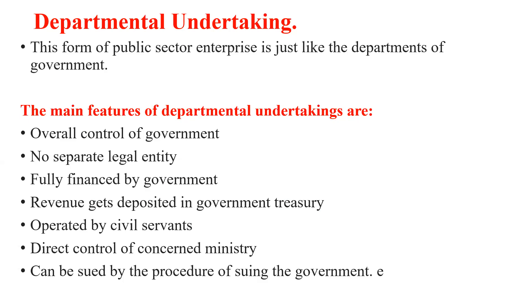The features of departmental undertaking are: first, overall control of government — the department is an inseparable part of government, so all activities are controlled by government. Second, no separate legal entity — it doesn't have any separate identity from the government. Third, fully financed by government — it is 100 percent financed by government. Fourth, revenue gets deposited in government treasury — all revenue generated, such as from railways, goes directly to the government treasury.